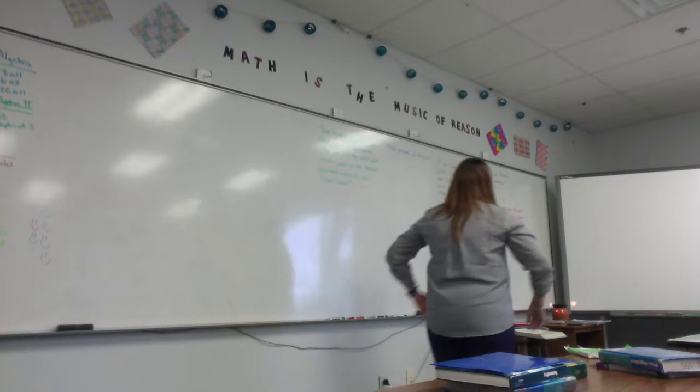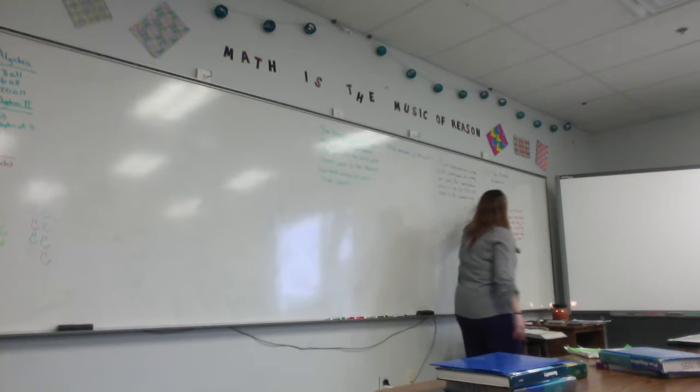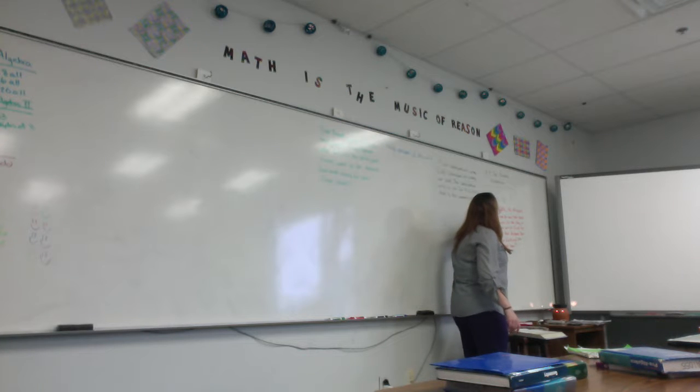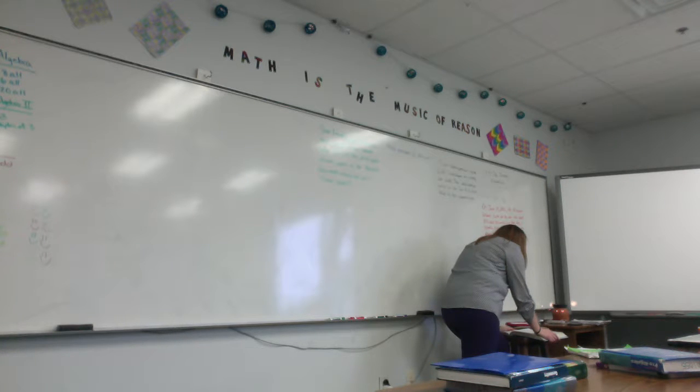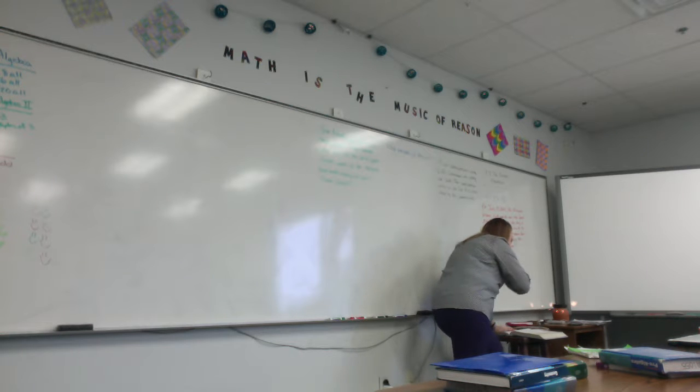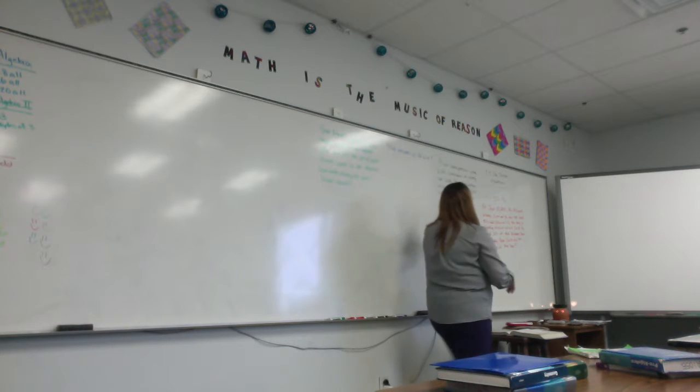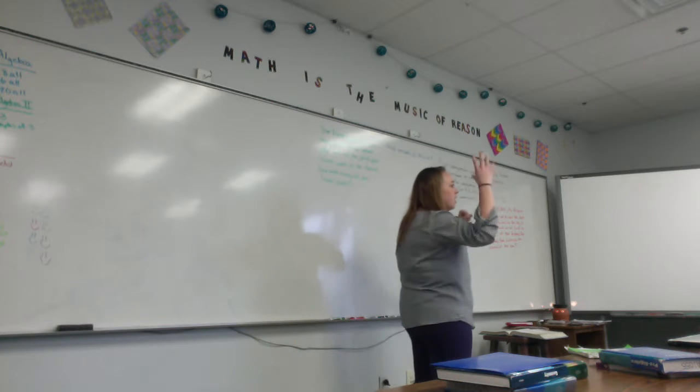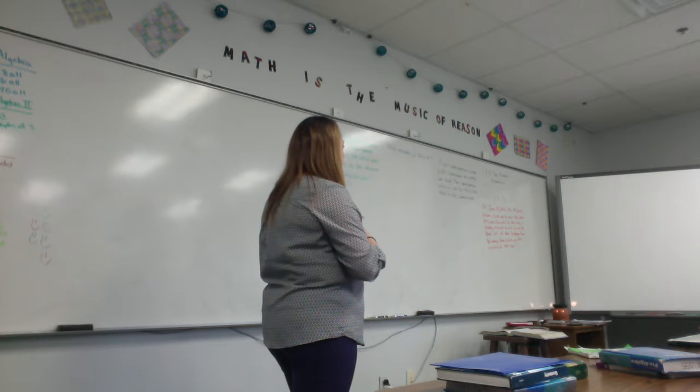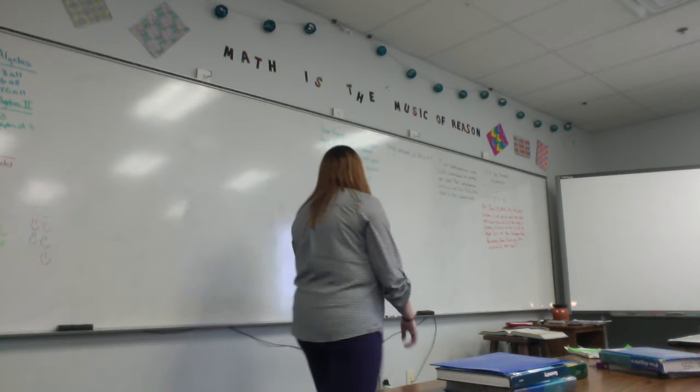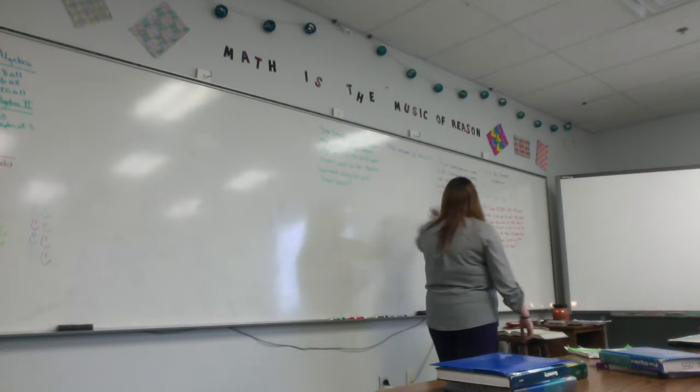Section 7.4, the percent equation. The percent equation is this, and you need to memorize this. A equals the percent times B. A is P percent of B is how we say that. Where A is a part of the base, A is a part of the base which is B. So A is the smaller part, B is the larger part. A equals the percent times the base. Then we come to lots of fun word problems.